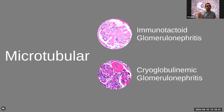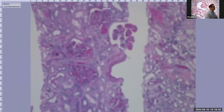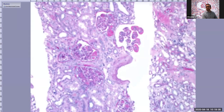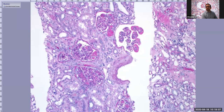Moving to diseases with microtubular deposits: there is the renal-limited immunotactoid glomerulonephritis and cryoglobulinemic glomerulonephritis. Here is a medium-power image showing four or five glomeruli exhibiting — even from low power — a membranoproliferative pattern of injury.